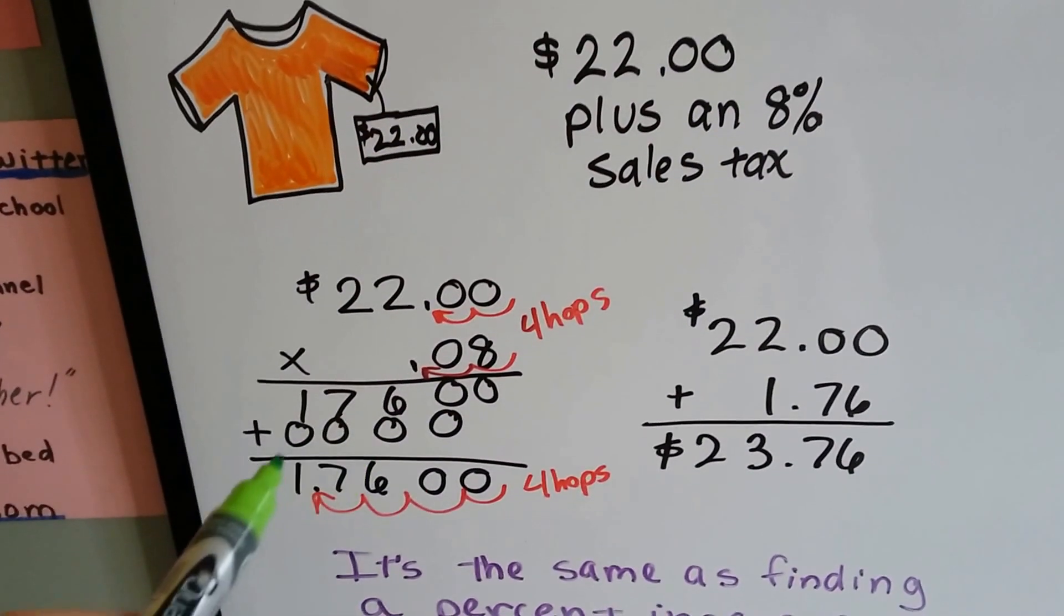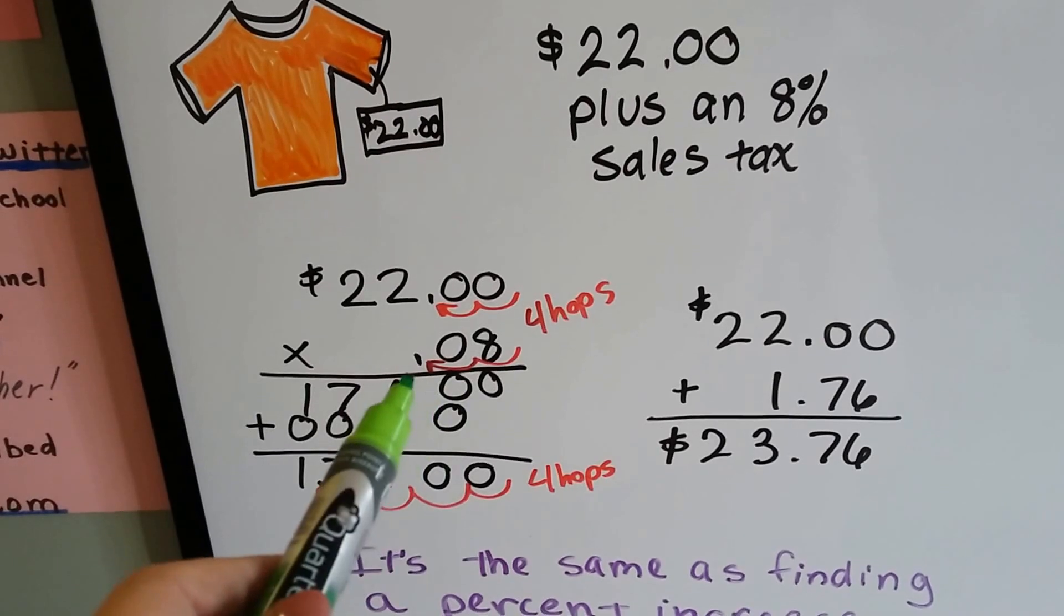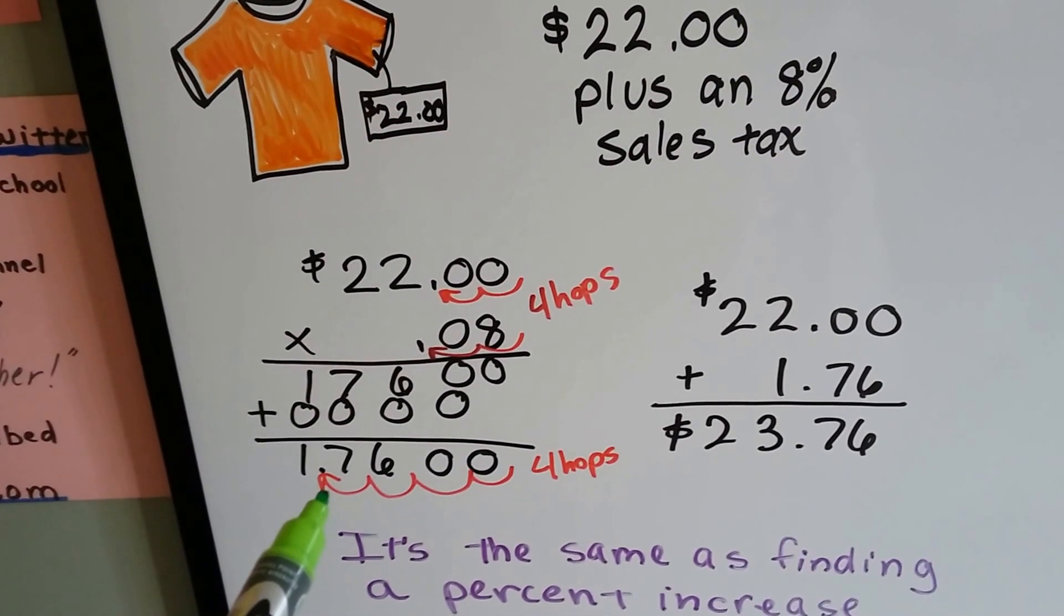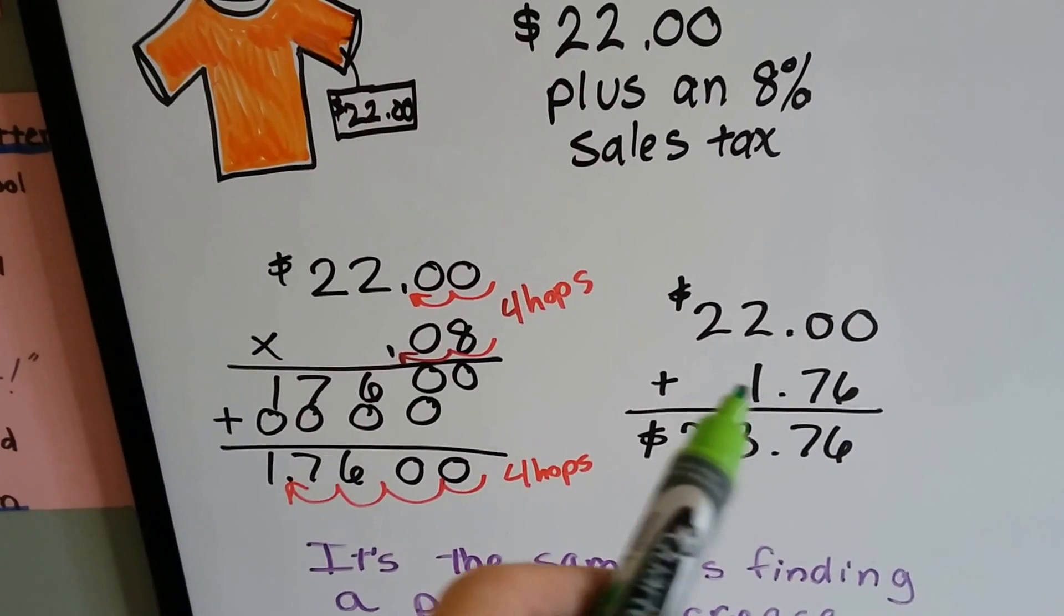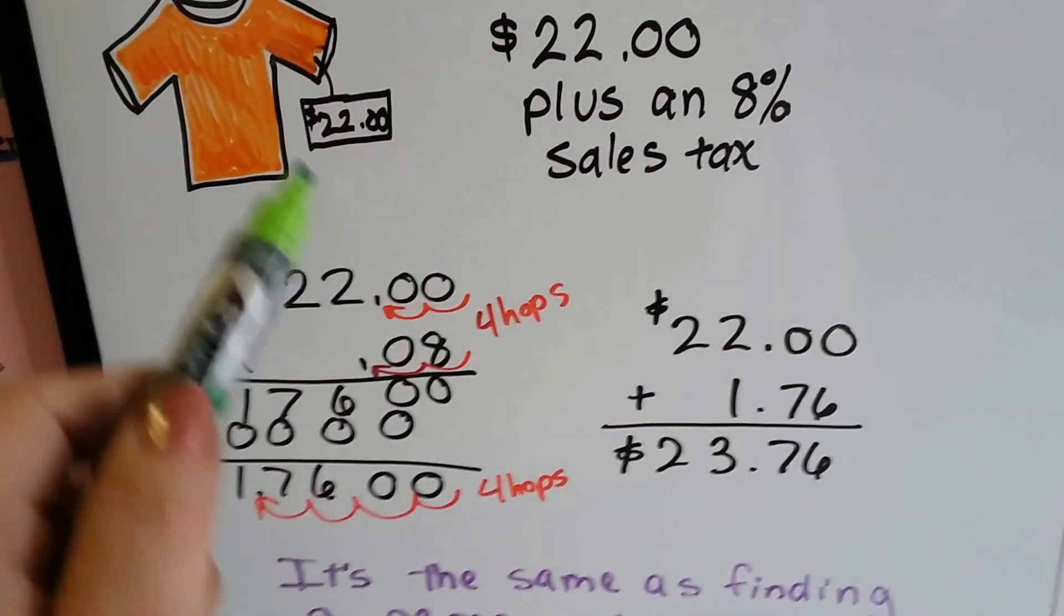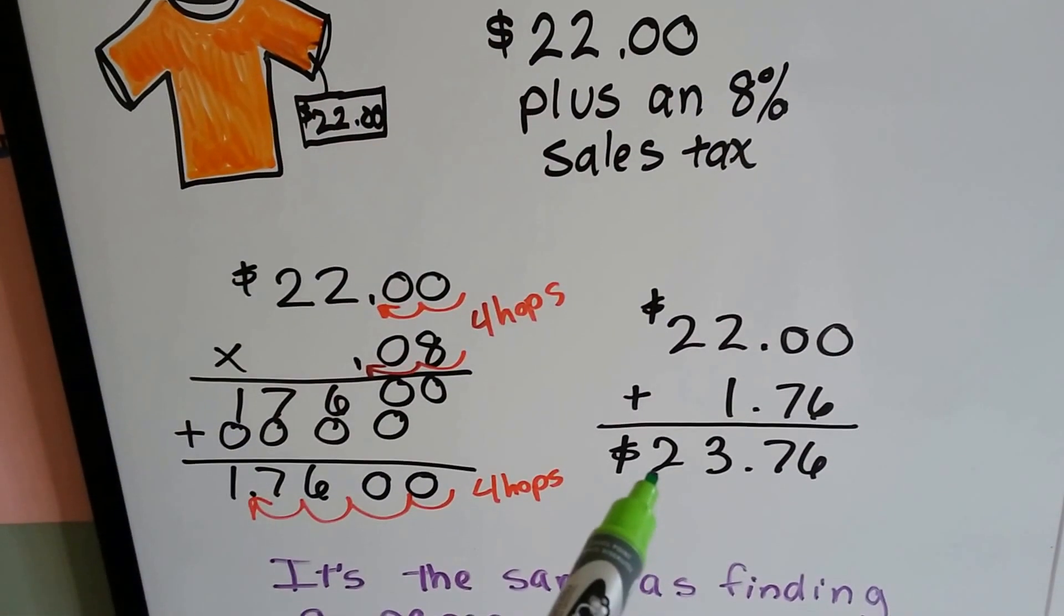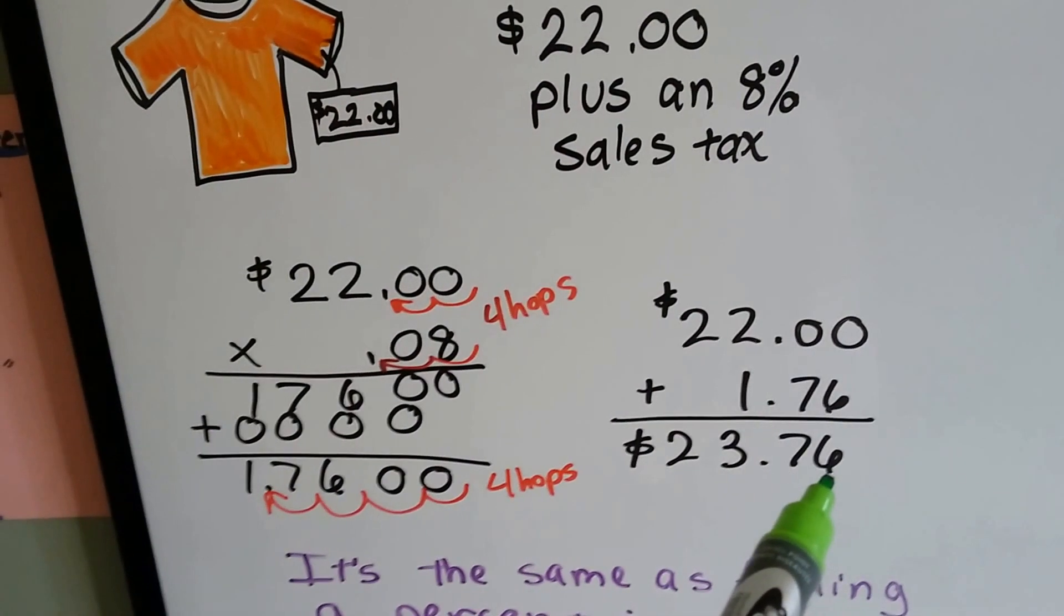We do our multiplication addition. And there's four decimal places in the equation, so there's four decimal places in the product. And we get $1.76. We add that to the price of the shirt. And the total of the shirt is now $23.76.